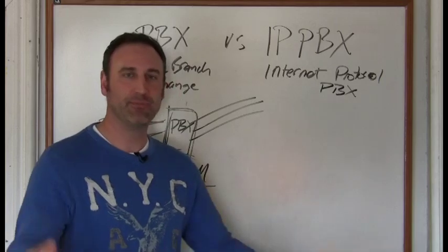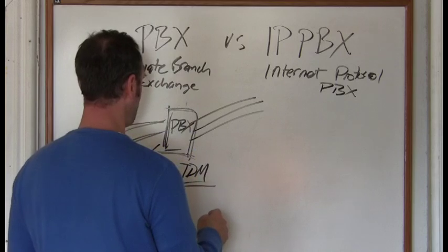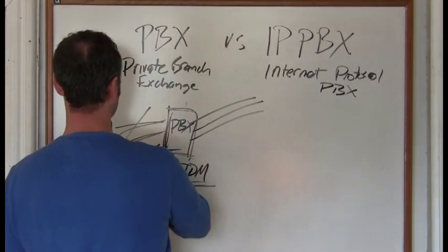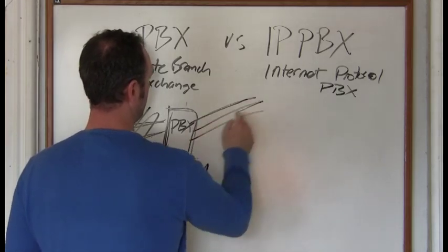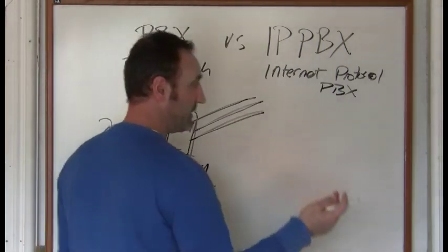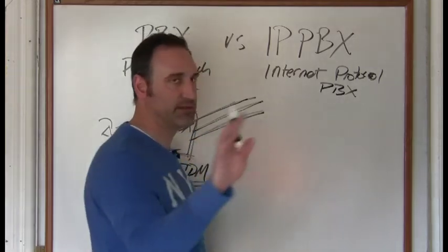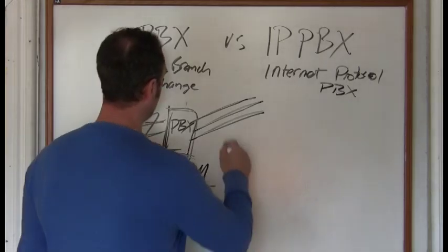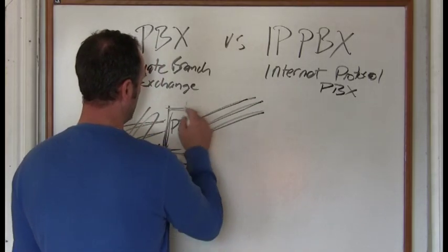Now on the other side, when you're talking about an Internet Protocol PBX, the lines are going to be the same unless you're using SIP trunks, which is another subject I'll cover in a different video. But let's just say you're using the same telephone service.